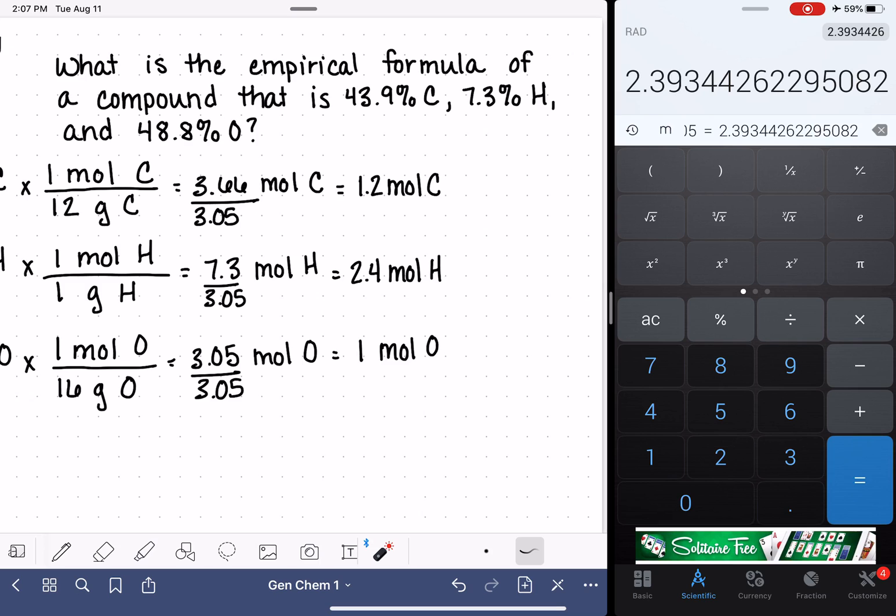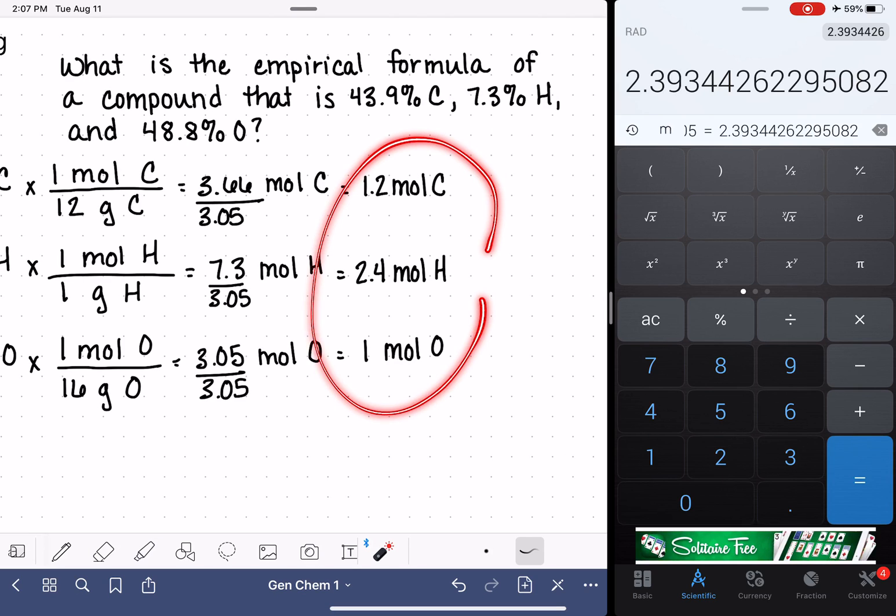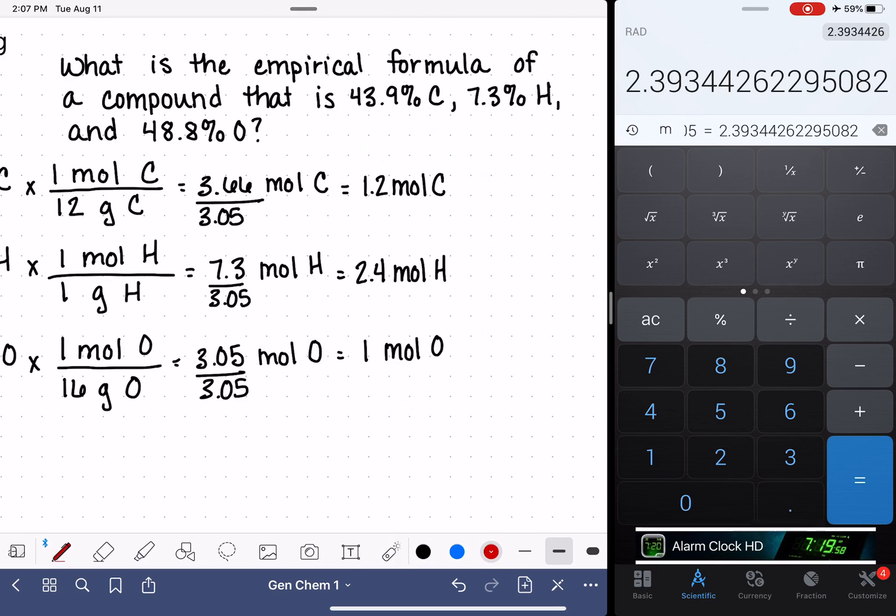There's a few different strategies that people take when they're in this situation. Let me tell you right off the bat, the wrong strategy is to just start heavily rounding. Just turning these into whole numbers, that is definitely not how you want to solve this type of a problem.